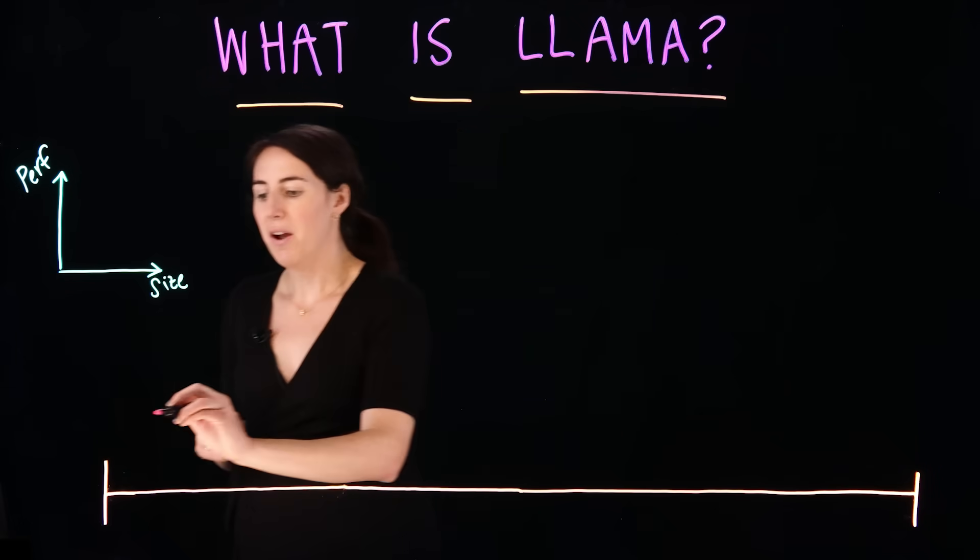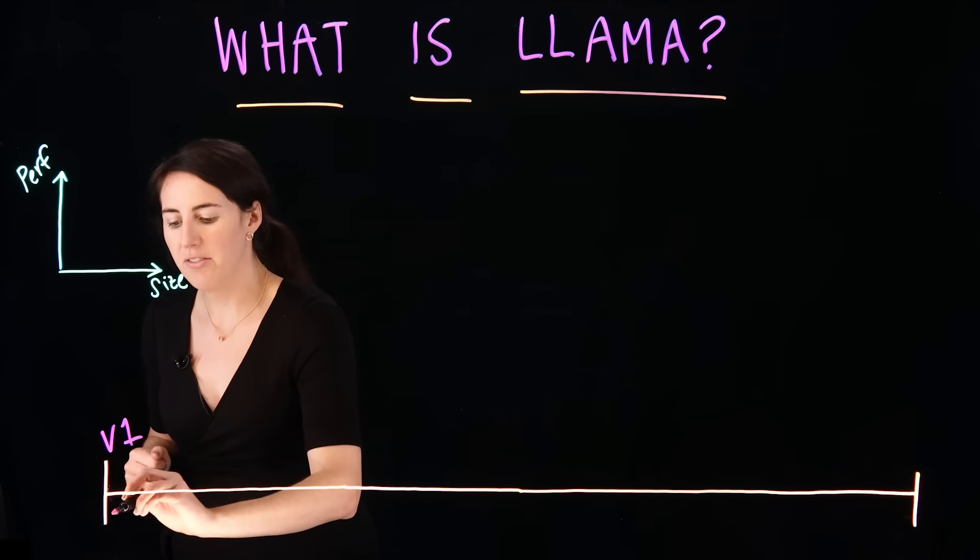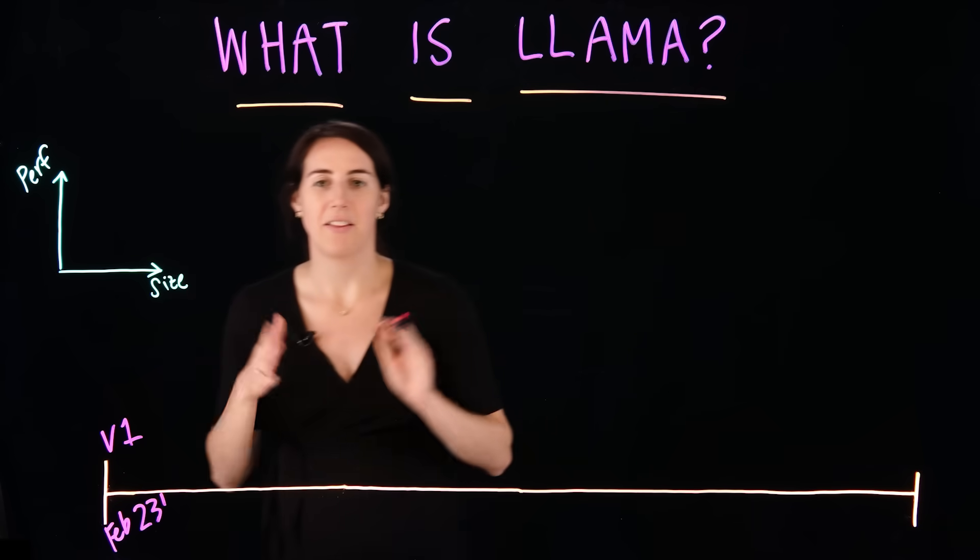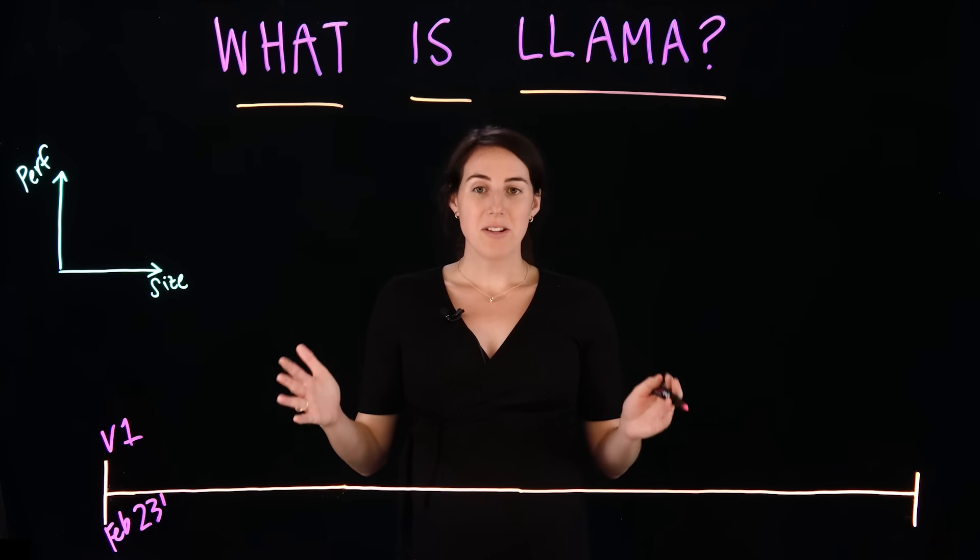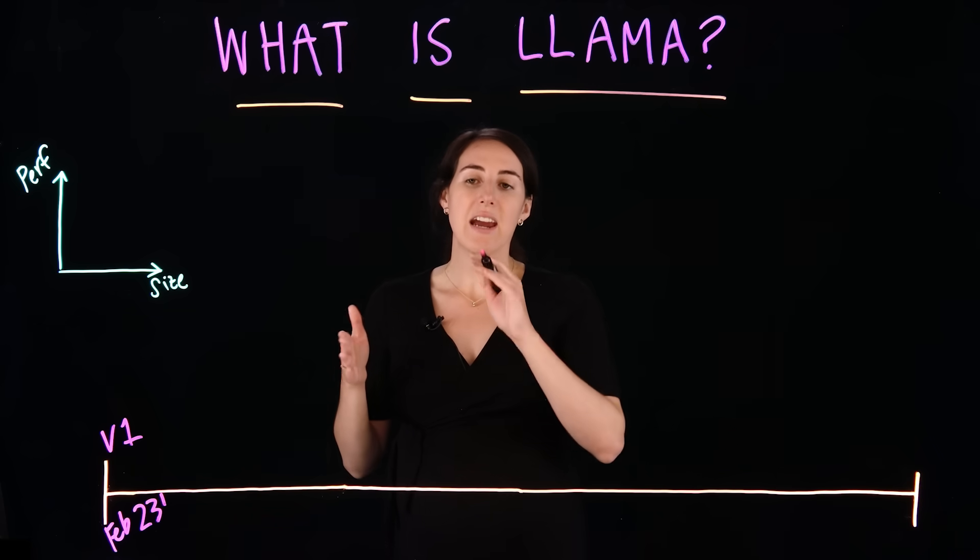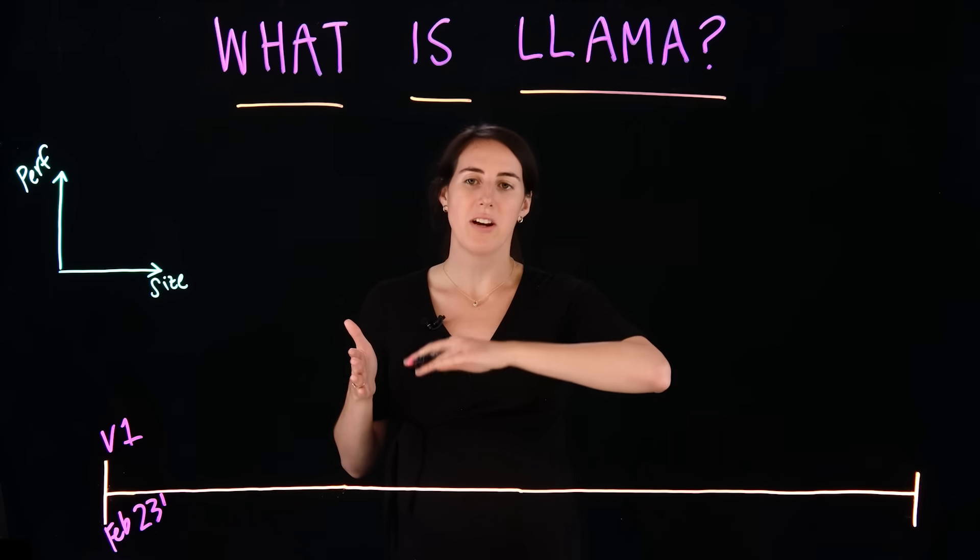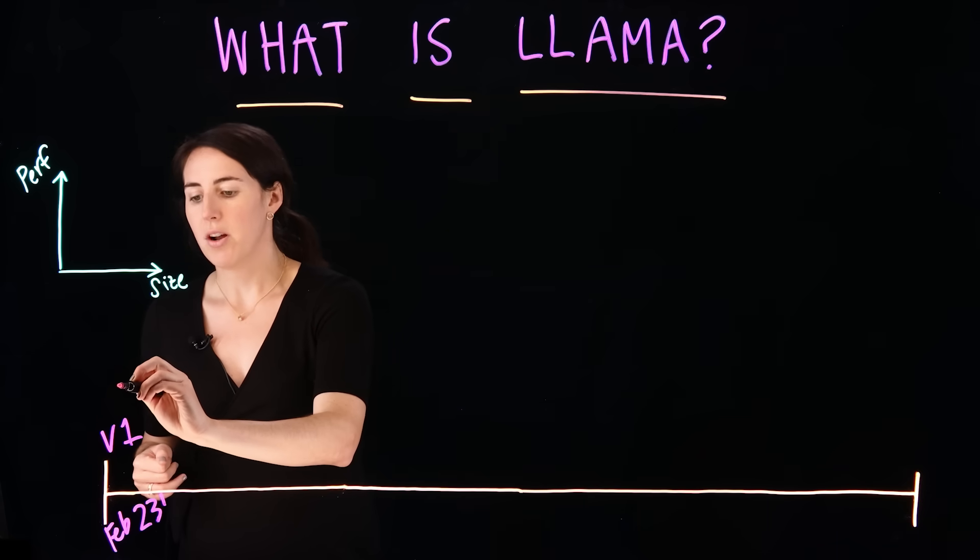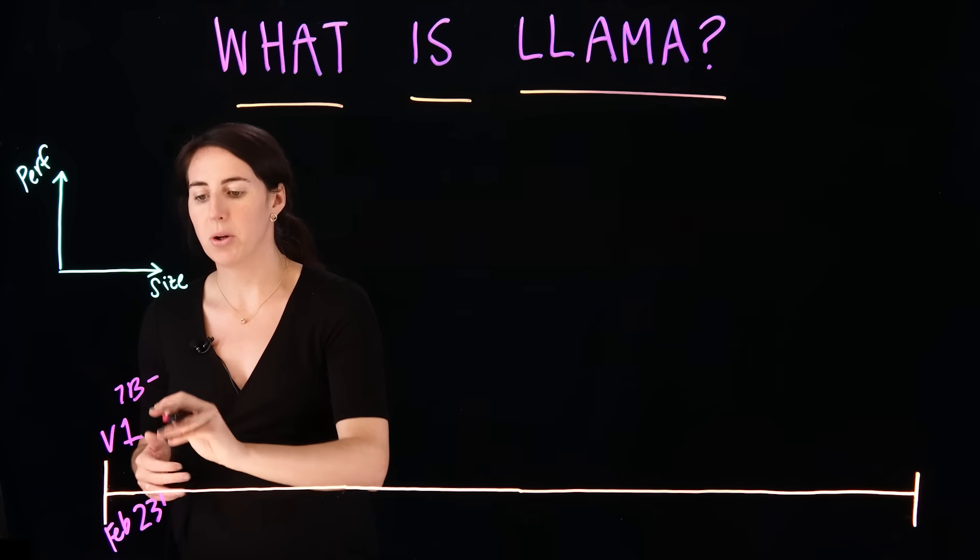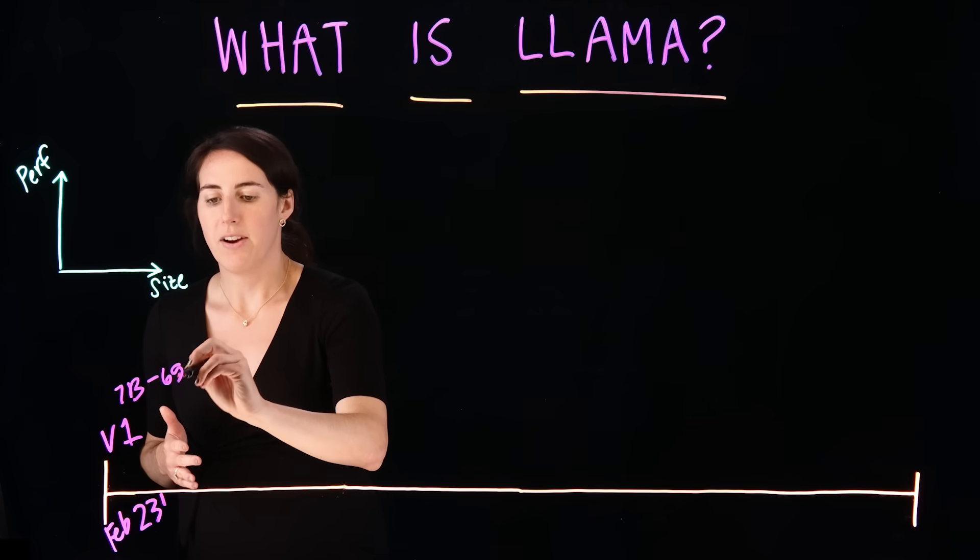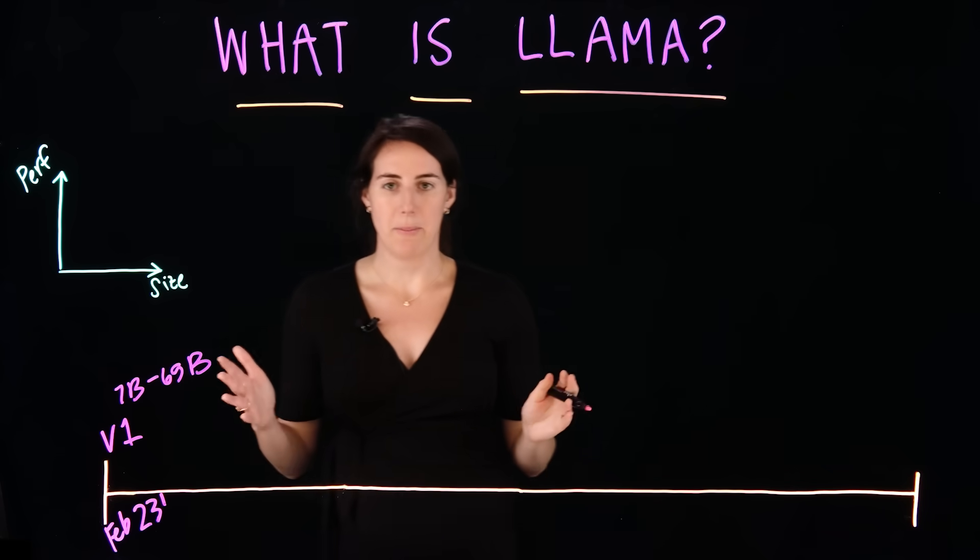All right, now let's talk about the history of llama. So, the first version of llama came out in February of 2023. And what llama does is it's trained on words and sequences of words, and it takes the previous word and tries to predict what the next word is. And the first version of llama ranged from 7 billion parameter model up to 65 billion parameter model.